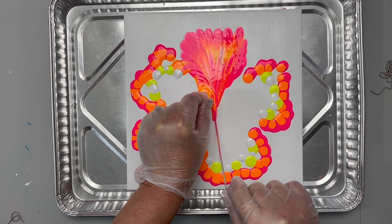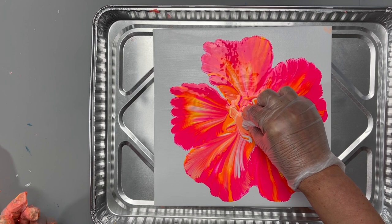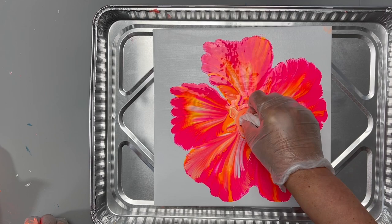I'm going to take a paper towel and I'm just going to soak up some of the center. We will come back and add some of the colors that we have in our petals and make a fun little center for our flower.